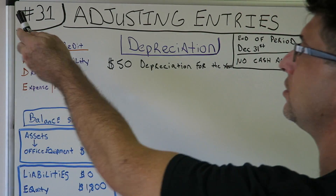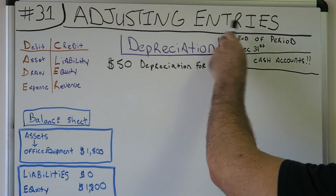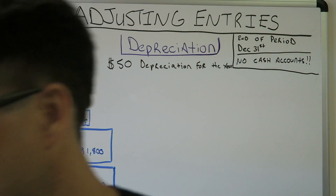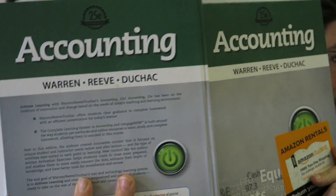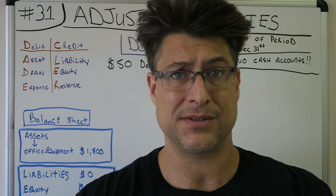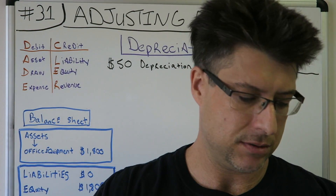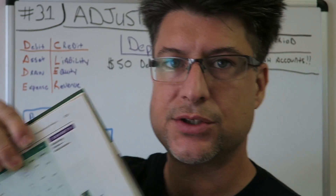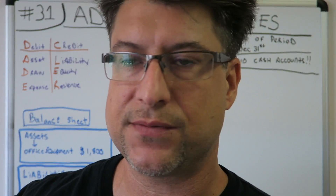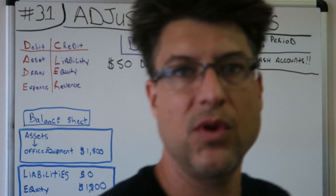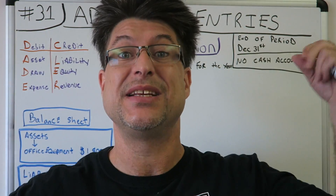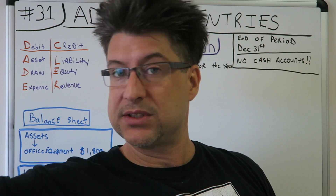This is highly requested — number 31 is going to be adjusting entries. In the book I have here, there are five different adjusting entries and we're just going to go through them. This video and the next four will cover all the adjusting entries.